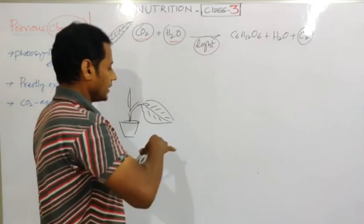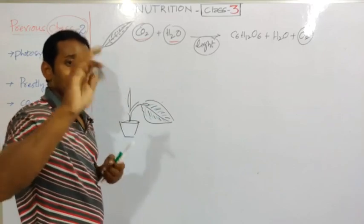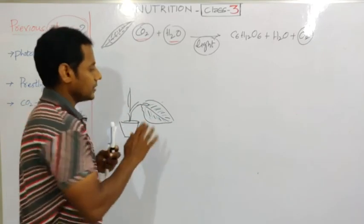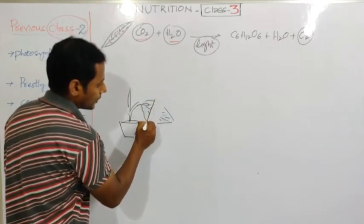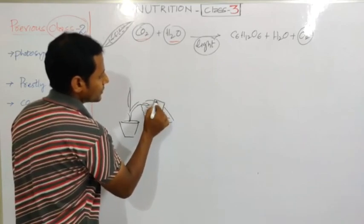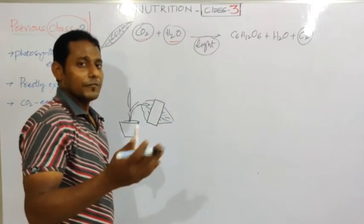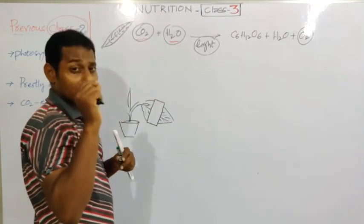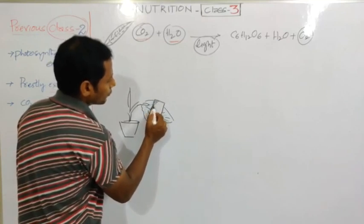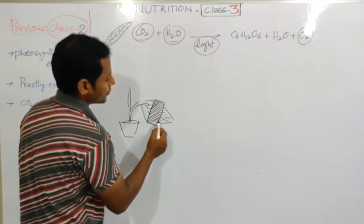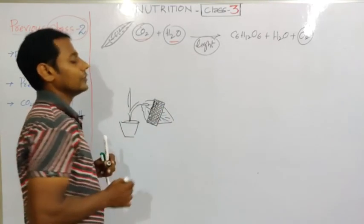After destarching, we take a green leaf from the plant. After the destarching period, we cover this leaf partially with a black paper. We cover part of the leaf completely with black paper so that light cannot reach that covered portion. For example, I am covering this leaf up to here with the black paper - covering this portion completely with black paper so light does not fall on it.